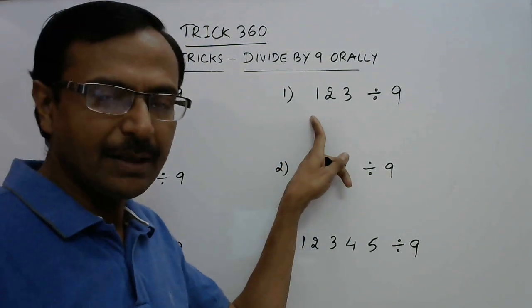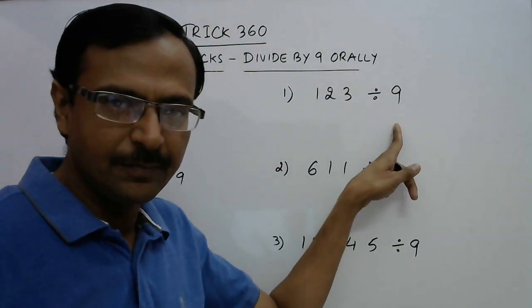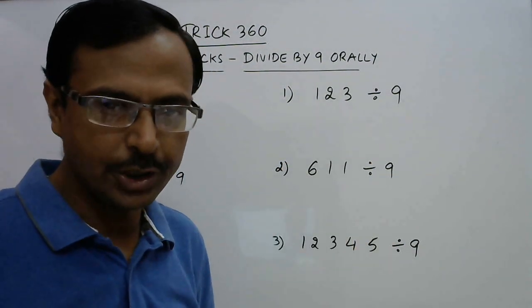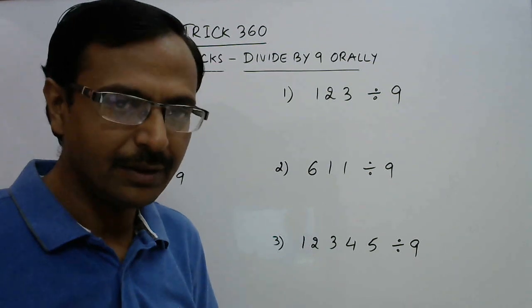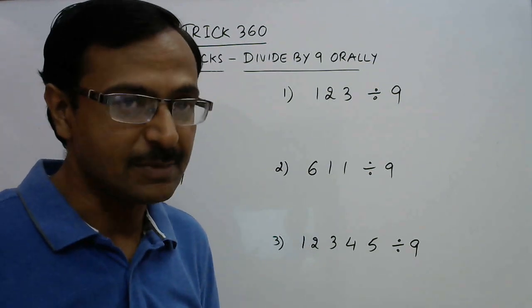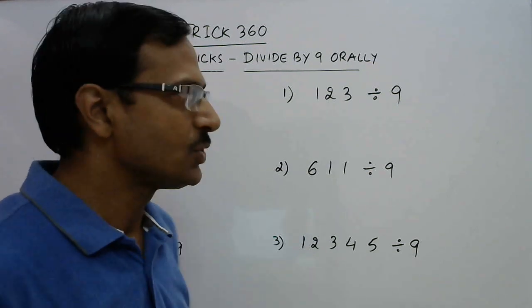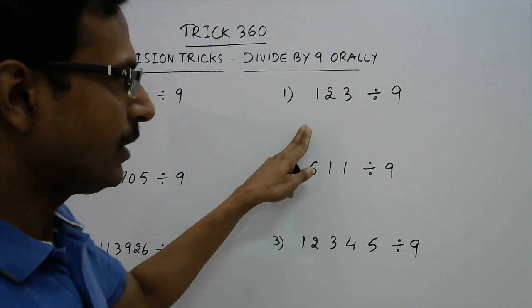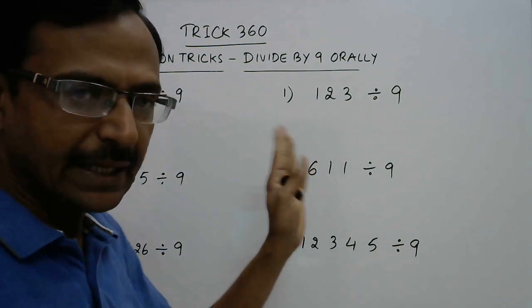When we have to divide a number by 9, we will try and find the quotient and the remainder — not the answer in decimals. The method goes like this.